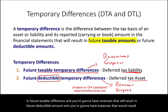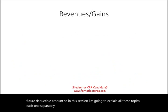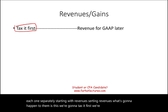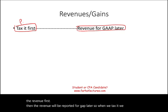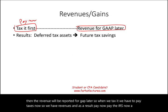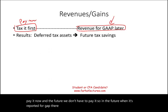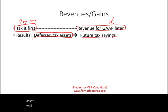For certain revenues, we tax them first and then report them for GAAP later. Since we pay the taxes now, in the future when the revenue is recognized for GAAP there's no tax bill — that results in a deferred tax asset. We have a future tax savings because when we recognize the revenue for GAAP, there's no corresponding tax expense.